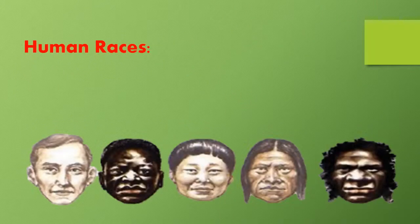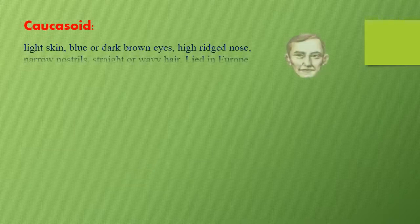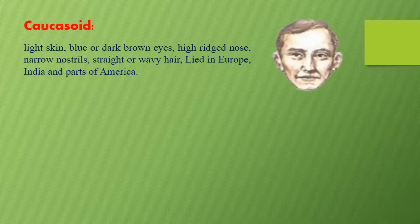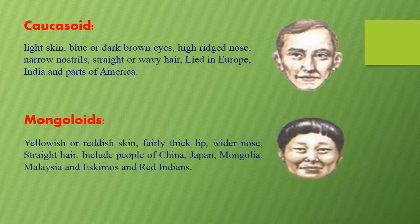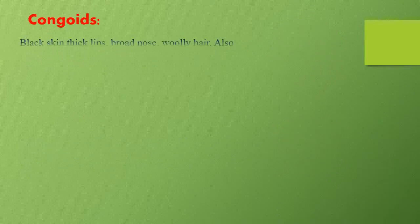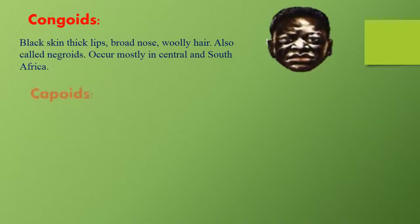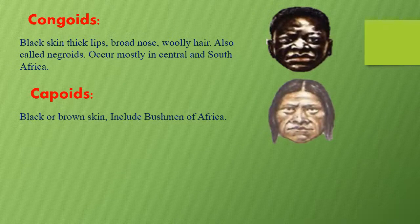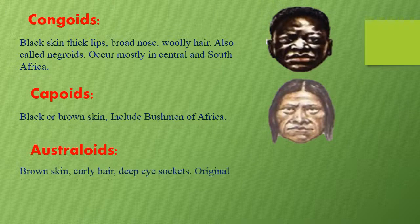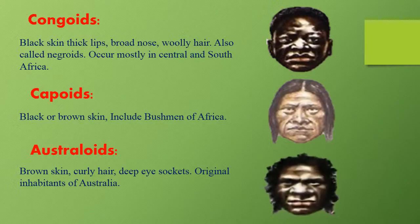Human Races. Broadly, five races have been identified: Caucasoids, generally characterized by light skin; Mongoloids, characterized by yellowish or reddish skin; Congoids, characterized by black skin; Capoids, characterized by black or brown skin; and Australoids, characterized by brown skin, curly hair, and deep eye sockets.